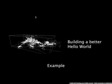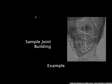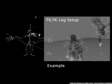Now we look at an example of how to build a simple Hello World script, a sample joint building script, and setting a switchable FK/IK leg within XSI.